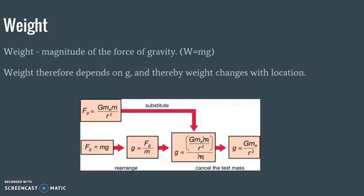For example, you can plug in the mass and radius of the Moon to find the gravitational field strength on its surface. You can even do this with your cell phone — plug in its mass and approximate radius, and you get the gravitational field strength at its surface. It will be extremely small compared to Earth's, but it still has a numerical value.